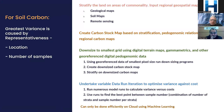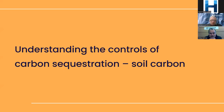For soil carbon, the greatest variance is caused by representativeness — meaning where you have to sample and the number of samples you need. It involves a fairly complicated process that goes through stratifying, creating carbon stock maps and the like. And this can only be done by machine learning.